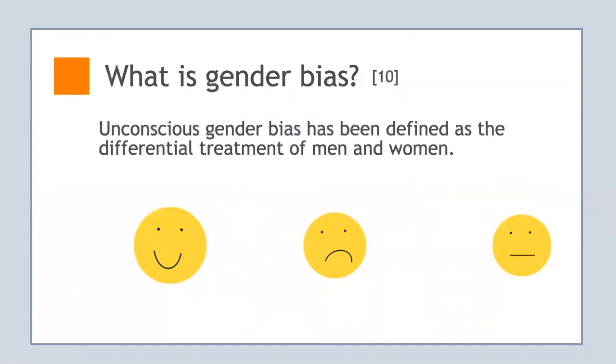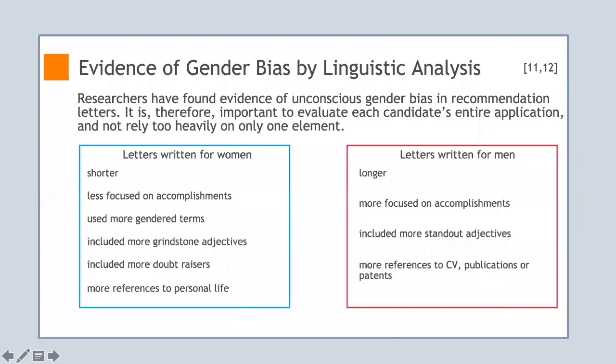Unconscious gender bias has been defined as a differential treatment of men and women, the impact of which can be positive, negative, or neutral. In a 2003 study, academic linguists reviewed 312 letters of recommendation for faculty hired at a major medical school in the United States. Letters written for the female applicants were shorter and less focused on the candidate's record of accomplishment. Instead, they used more gendered terms such as 'intelligent young lady' or 'insightful young woman.' The letters for the women candidates also included more grindstone adjectives such as hardworking, conscientious, dependable, careful, and meticulous.